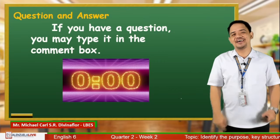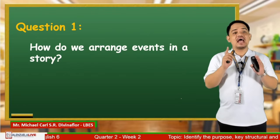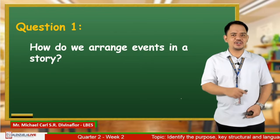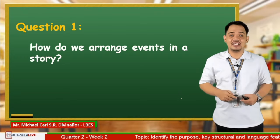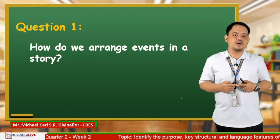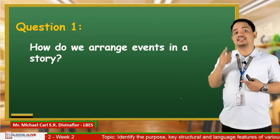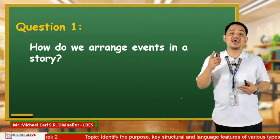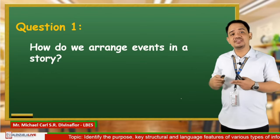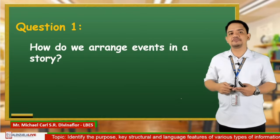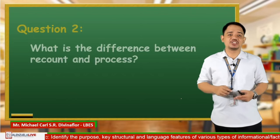We are now going to read some of your questions from the comment section and I'll try to answer them. Question number one: How do we arrange events in a story? Thank you for your question. If you have figured out the key details from the text that you are reading, you can use graphic organizers to show the flow or the sequence of events. Another thing you may use is signal words such as first, second, next, then, and finally or lastly — these give us a hint or clue about the order of the events.